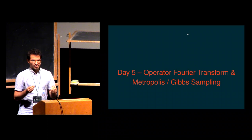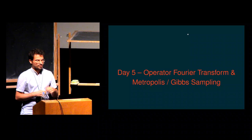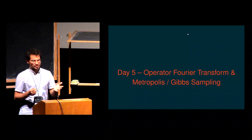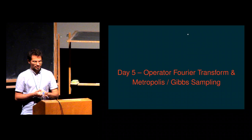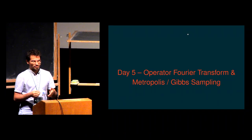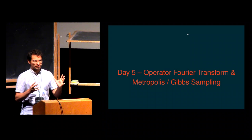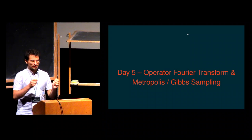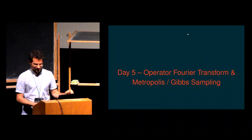In quantum mechanics there are two views on how you evolve time. One is called the Schrödinger picture, where you track how quantum states change, and phase estimation is in that framework. The other is called the Heisenberg picture, where you keep your quantum states fixed but your operators are evolving with time. Operator Fourier transform is the Heisenberg evolution analog of quantum phase estimation.